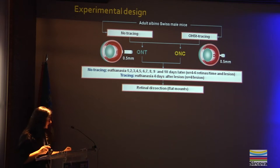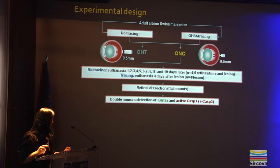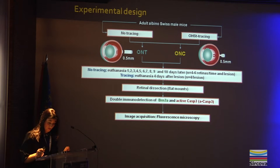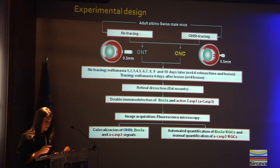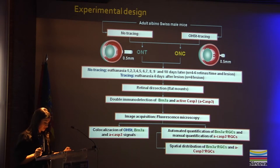The retinas were dissected as flat mounts. In whole retinas, BRN3A and active caspase-3 were double immunolabeled. The whole retinas were then photographed for each signal, and we studied the colocalization of BRN3A, caspase-3, and the tracer, as well as the total population and retinal distribution of viable BRN3A positive ganglion cells and of apoptotic active caspase-3 positive ganglion cells.